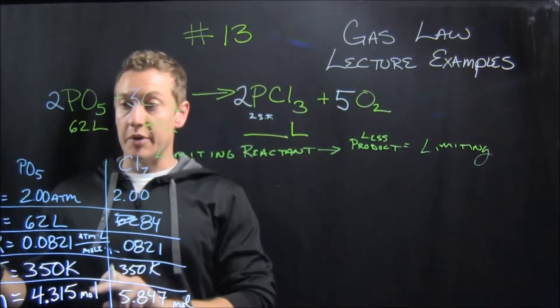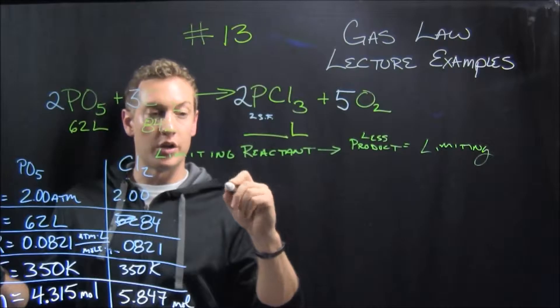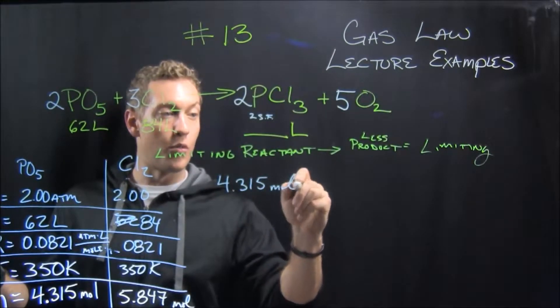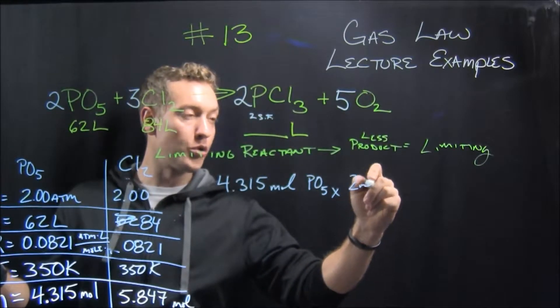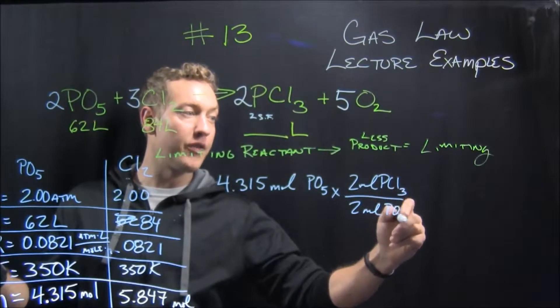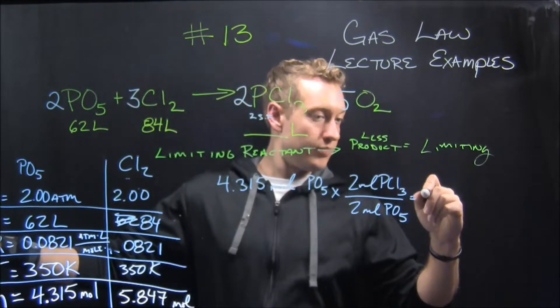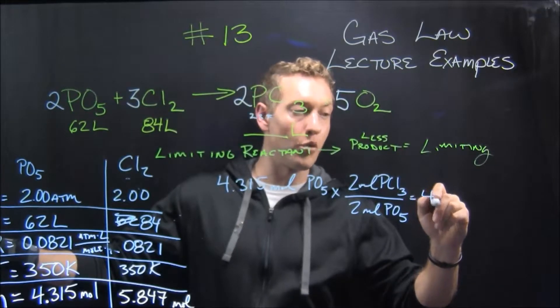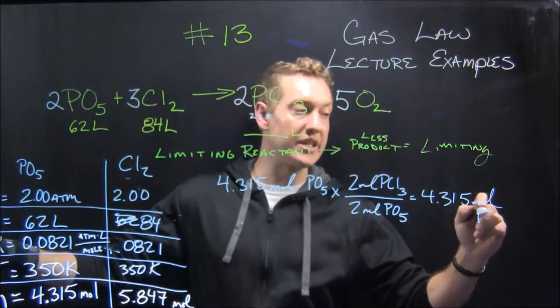Now we need to figure out with this many moles of each reactant, how many moles of the product. Well, it's 4.315 moles of PO5 times 2 moles of PCL3 for every 2 moles of PO5. So I have enough phosphorus pentoxide to make 4.315 moles of PCL3.